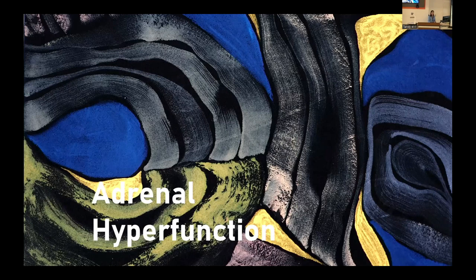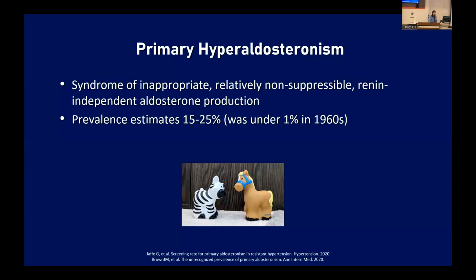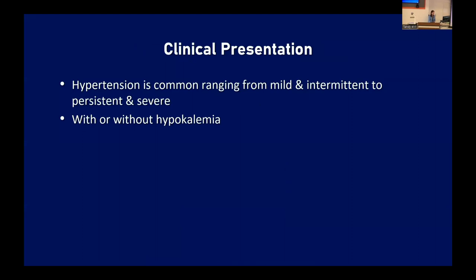Starting with hyperfunctional states: primary hyperaldosteronism, looking at that outermost layer of the cortex, is basically a syndrome of inappropriate, relatively non-suppressible, renin-independent aldosterone production. The prevalence is estimated to be around 15 to 25%. Interestingly, in the 1960s when Dr. Conn was first studying this, the thought was that less than 1% of the population was affected. So this should be high on everyone's radar in someone who has high blood pressure.